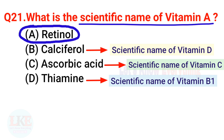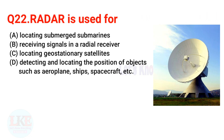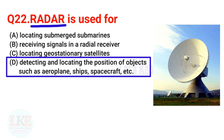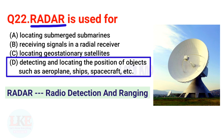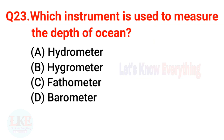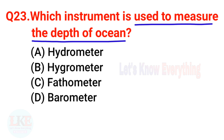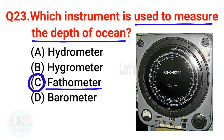Question 22: RADAR is used for detecting and locating the position of objects such as aeroplanes, ships, and spacecraft. The full form of RADAR is Radio Detecting And Ranging. Question 23: Which instrument is used to measure the depth of the ocean? The right answer is option C — fathometer. Fathometer is used to measure the depth of an ocean.